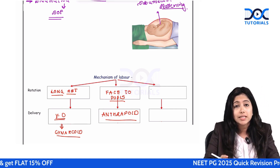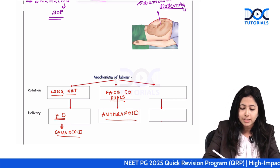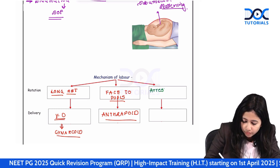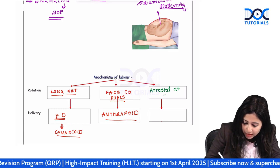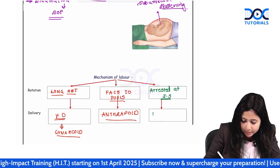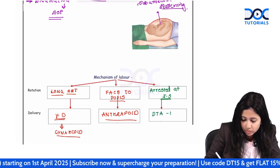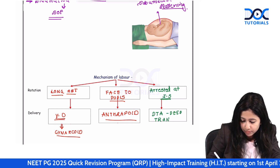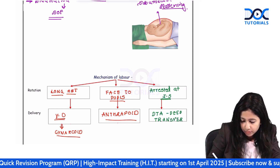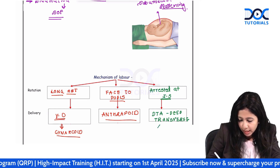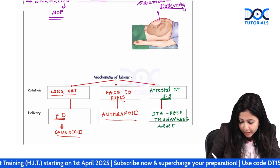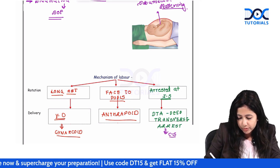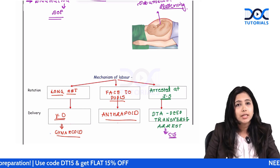Sometimes the baby gets arrested at the level of the ischial spine after a short anterior rotation. This is known as deep transverse arrest. The delivery in deep transverse arrest is always by cesarean section. If a question gives you deep transverse arrest, your answer is cesarean section.